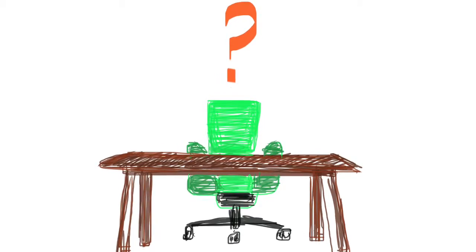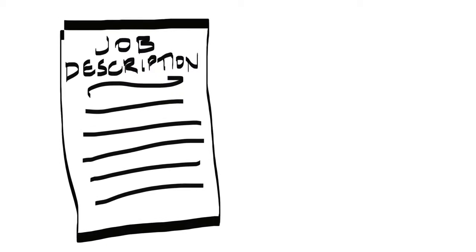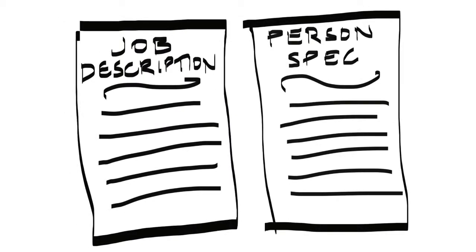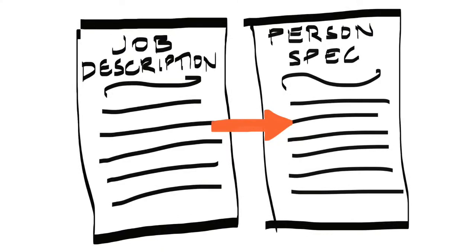Step 2. Prepare a sensible job description which accurately describes the job, and does so in results or outcome terms. What is the person expected to achieve in the role? Then write the person specification that identifies the key knowledge, skills and attributes that the successful person needs to deliver the job.